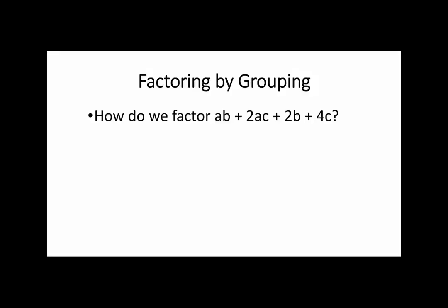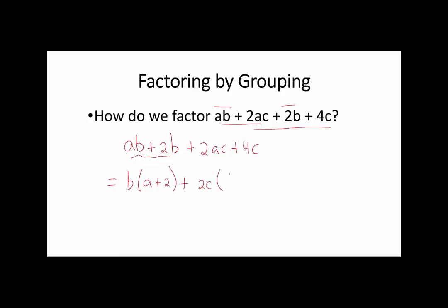Factoring by grouping. How do we factor something of this form? The first two terms have a in common; the last two have 2 in common. If we group ab+2b and 2ac+4c, we can pull out b from the first group to get b(a+2), and pull out 2c from the second to get 2c(a+2). These two terms have a common factor, namely (a+2). Pulling it out: (a+2)(b+2c).